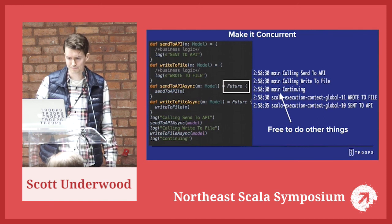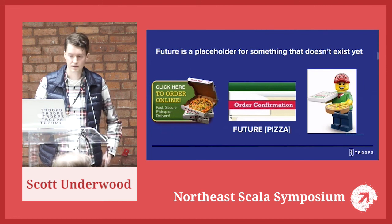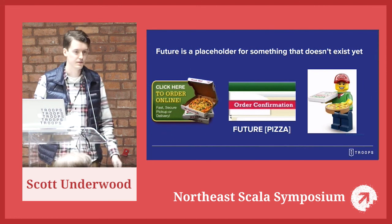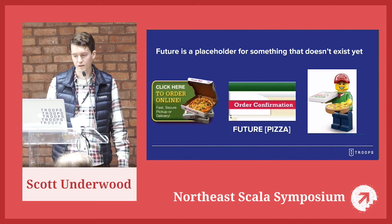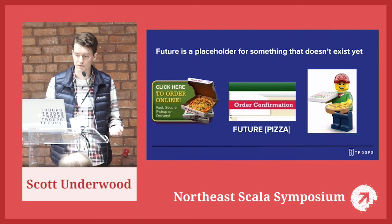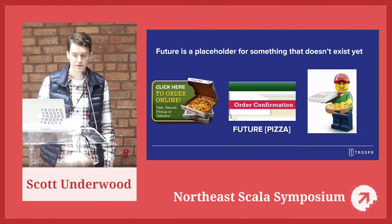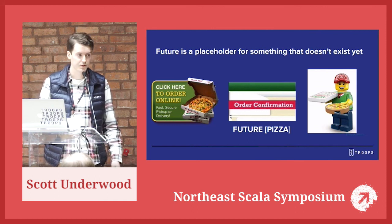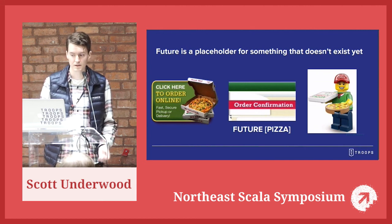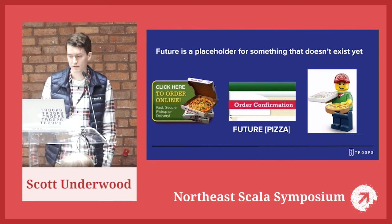A future is a placeholder for something that doesn't exist yet. A good analogy is an online order for pizza. You order pizza and immediately get a confirmation saying we promised to try to deliver this pizza. That email confirmation is representative of your future — you know it's coming, it's just not there yet. Your order is going to complete with either a success of a pizza or a failure — maybe the delivery guy wrecks his car.